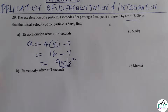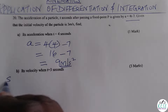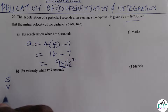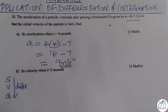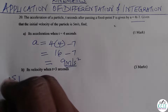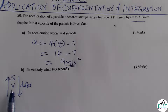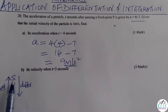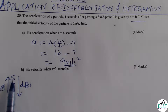Part B: velocity when t equals 3 seconds. When given displacement s, you differentiate to get velocity; differentiate velocity to get acceleration — that's the downward movement. For the upward movement, if you're given acceleration and need velocity, you integrate. Similarly, given velocity, integrate to get displacement.